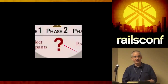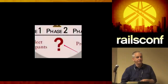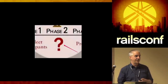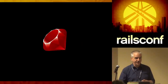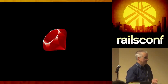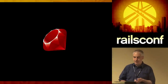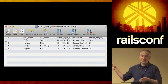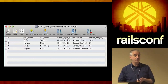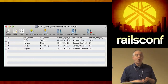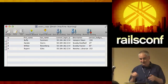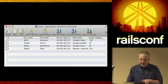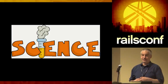The stuff that's in your users table right now — you can use it to turn into money. We're going to use Ruby, which everybody here is probably pretty familiar with. We already talked about how almost everybody's got a users table. And we are going to use science.